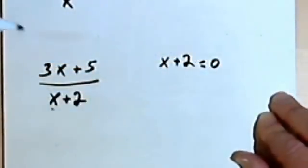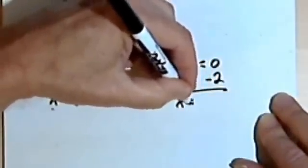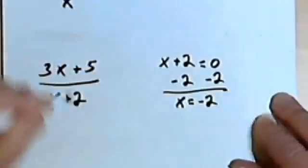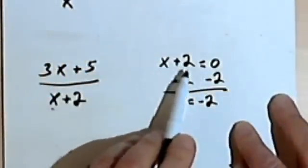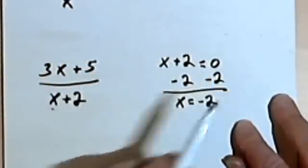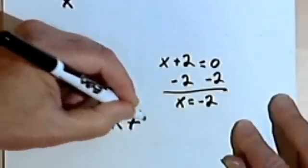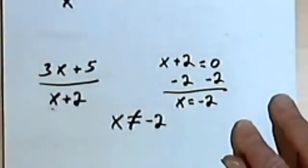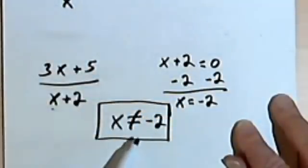And then solve this. So solving it, we'll subtract 2 from both sides. And we get x equals negative 2. In other words, negative 2 is the number that would make x plus 2 equal zero. So we want to write x does not equal negative 2. That's the restricted value for x.